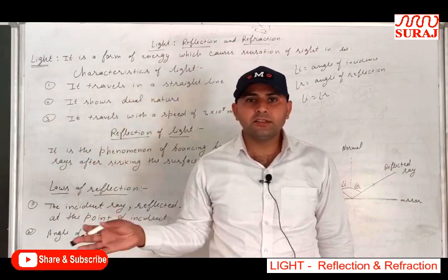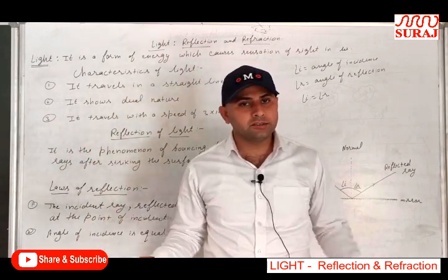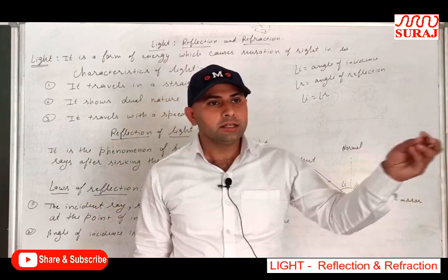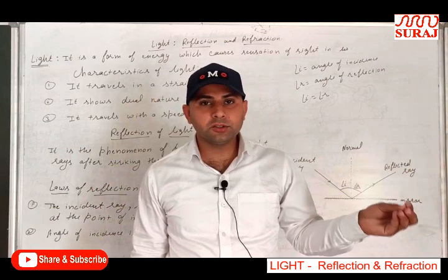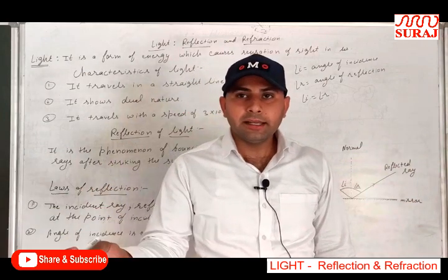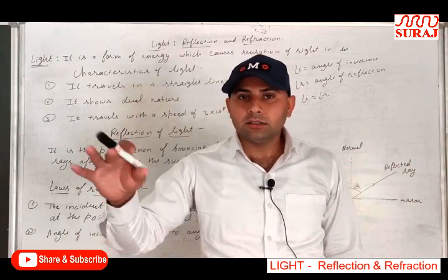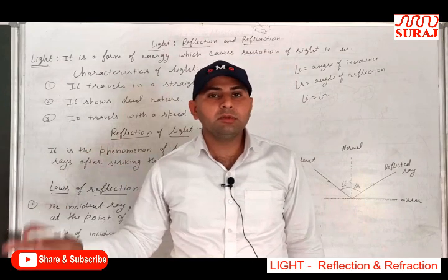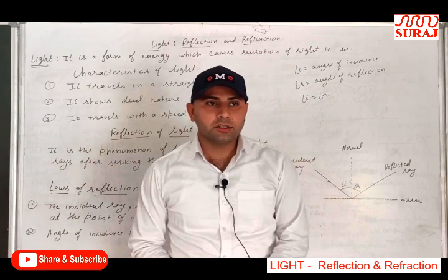Everything we see around us is due to light. Sun is the ultimate source of light. It is a natural source which provides us life, and it is due to light we are able to see things.